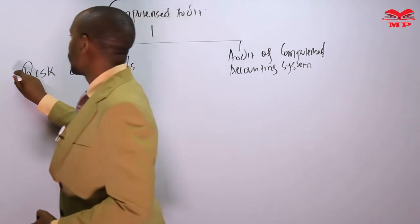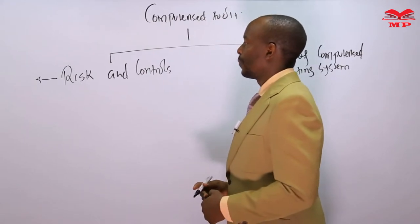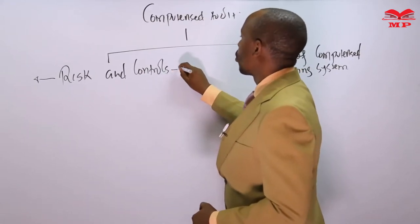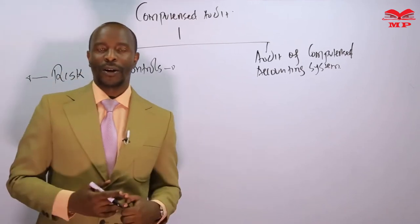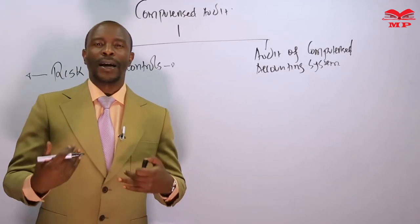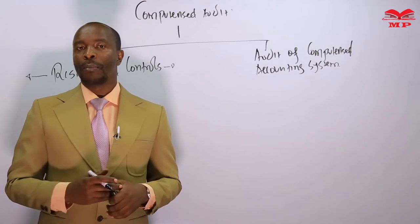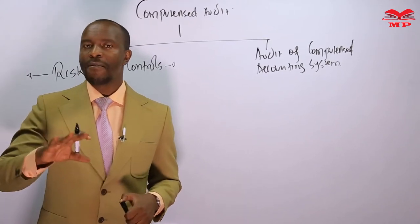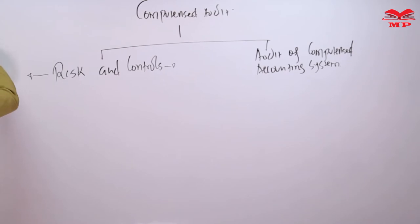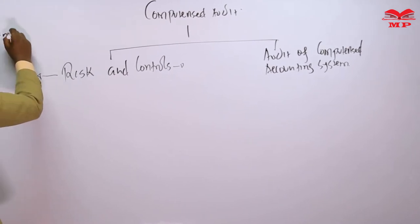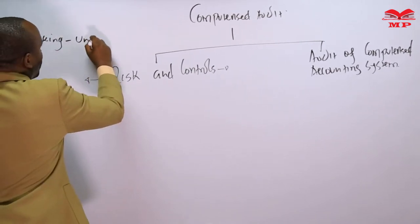I'm going to point out the risks you can encounter when auditing a computer system or when using a computerized accounting system, and also the controls you're supposed to use. When you have a computer system generally — forget about auditing for a moment — assume I have a computer being used for accounting or operations in my company. One of the biggest problems is what we call hacking, or if you prefer a less jargon term, unauthorized access.